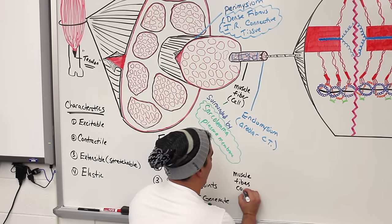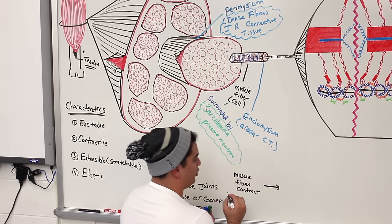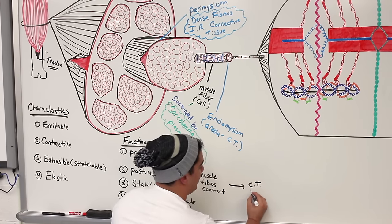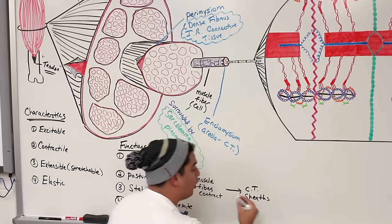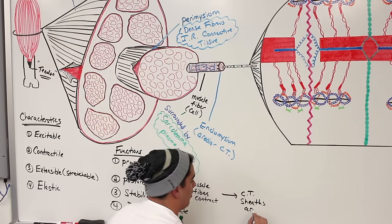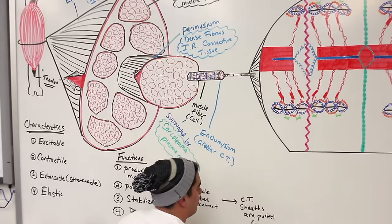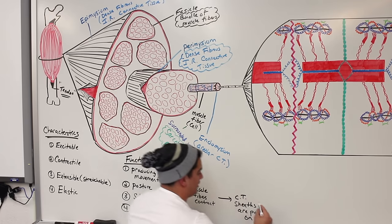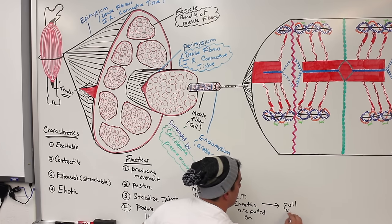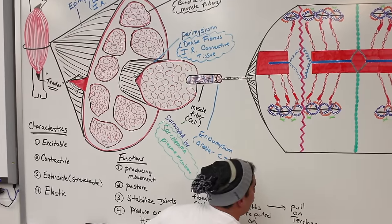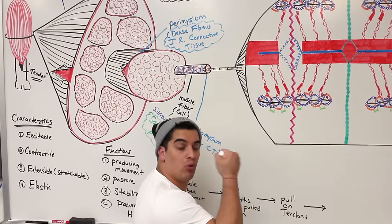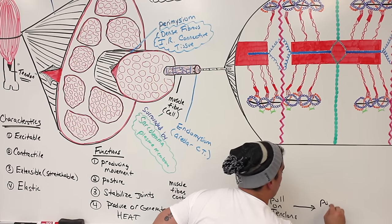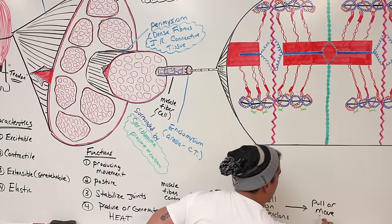Following the flow: muscle fibers contract → they pull on the connective tissue sheaths (endomysium, perimysium, epimysium) → those pull on the tendons → tendons pull and move the bone → producing locomotion.